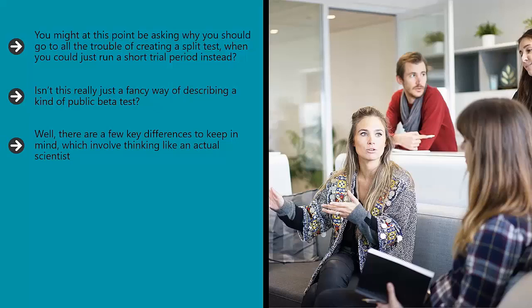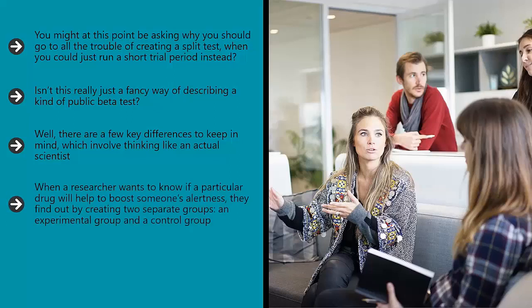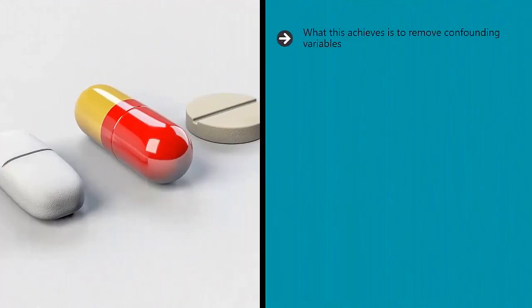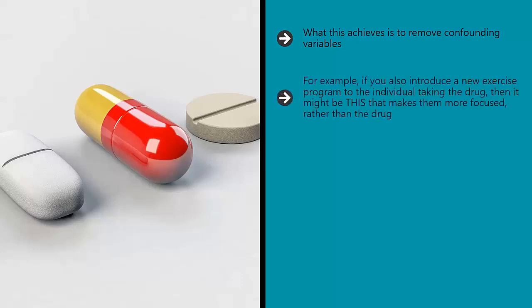This is precisely the same technique used in research. When a researcher wants to know if a particular drug will help to boost someone's alertness, they find out by creating two separate groups: an experimental group and a control group. The experimental group is the one that receives the drug, and the control group is the one that doesn't. This gives the researcher the opportunity to compare the stats from the two groups. What this achieves is to remove confounding variables — a confounding variable is anything that can hurt your outcome, rendering the results of the study useless.